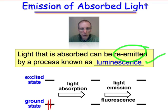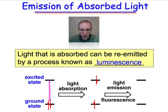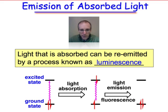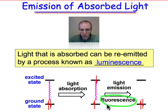One type of luminescence is a very simple process of just light absorption by the chromophore to make our excited state electronic configuration, followed by return to the ground state by re-emission of a photon. That process, the simplest of the luminescence processes, is known as fluorescence.